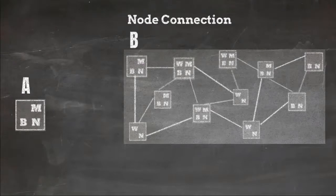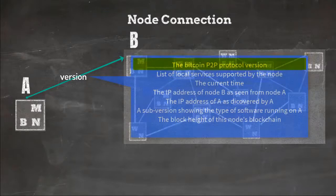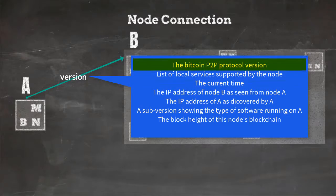To make connection node A will send a version message to node B. This version message will have P2P protocol version node A speaks, list of local services supported by this node, current time, IP address of the remote node which means node B as seen from node A, IP address of the local node which means node A and subversion information.